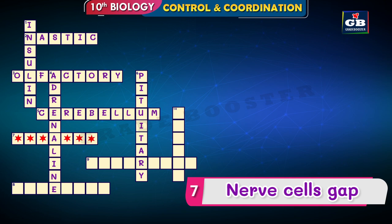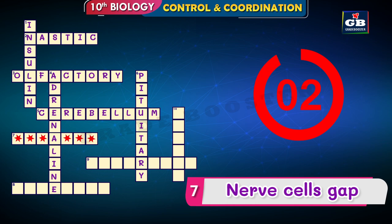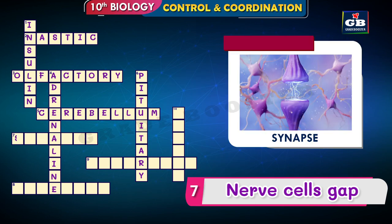Seven across — nerve cells gap. That is the hint: nerve cells gap. The answer is synapse. The nerve cells in the nervous system are not directly connected to each other. When one nerve cell meets another, there is a small gap, and this small gap is called a synapse.